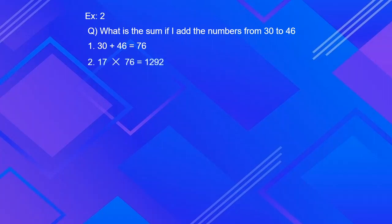The second thing we do is multiply the result by the amount of numbers in the group. There are 17 numbers from 30 to 46, so 17 times 76 which is 1292.